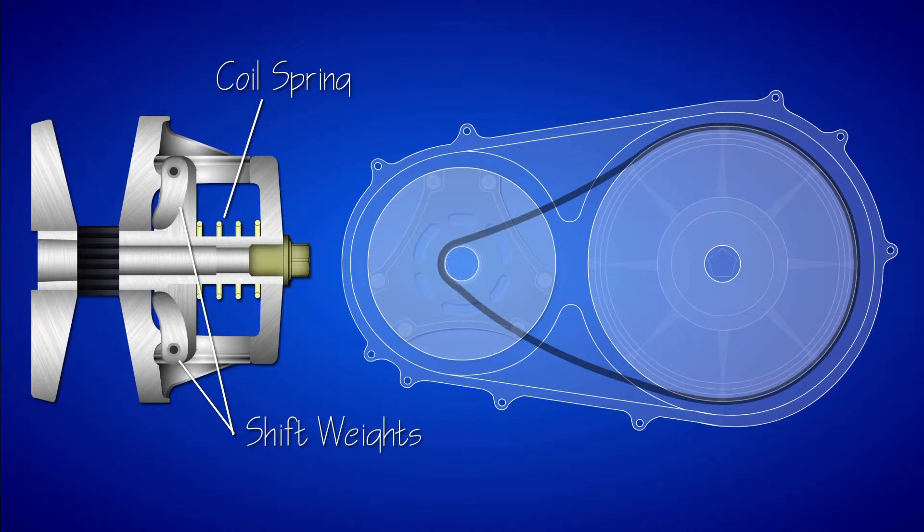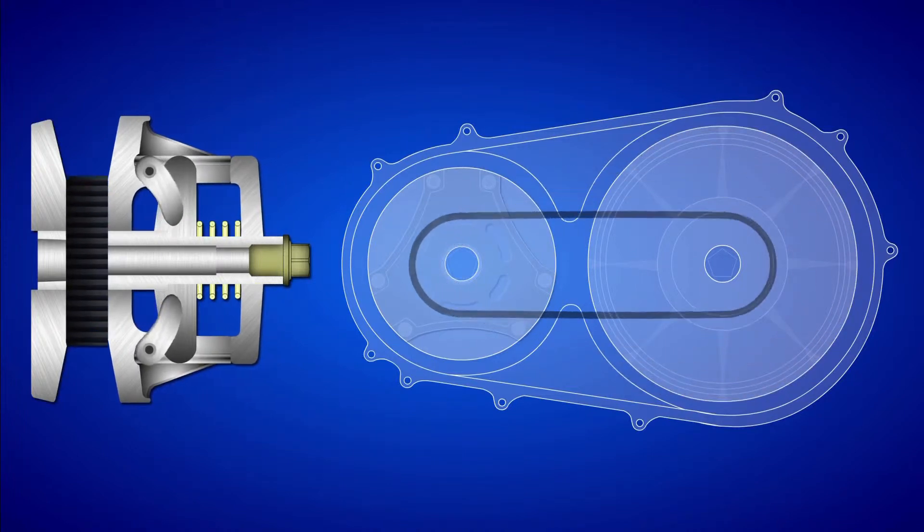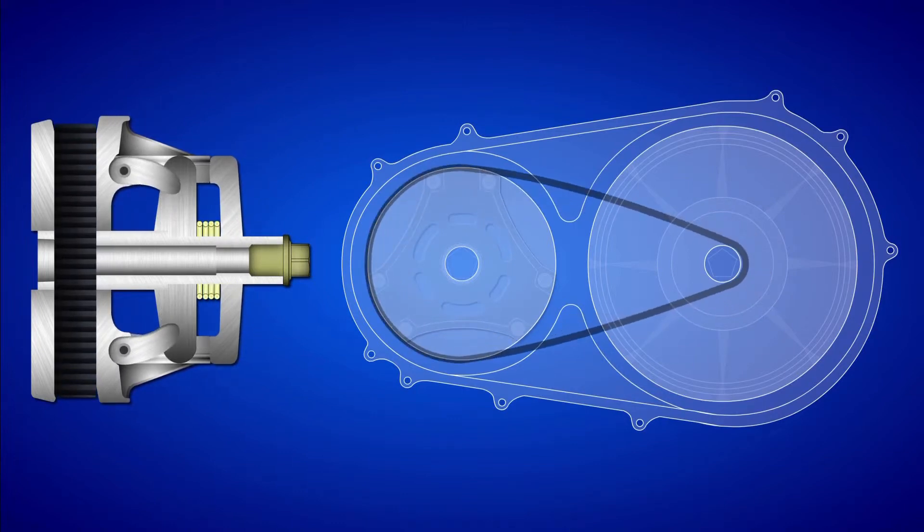The faster the drive clutch spins, the more the shift weights rotate outward, causing the movable sheave to move towards the stationary sheave, tightening the belt.